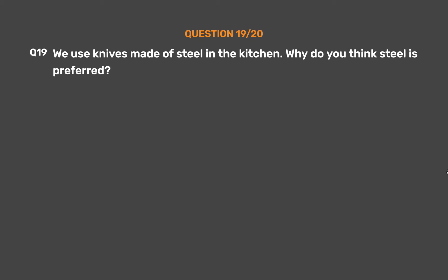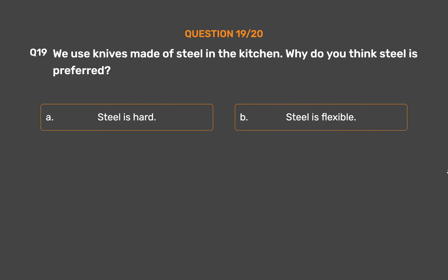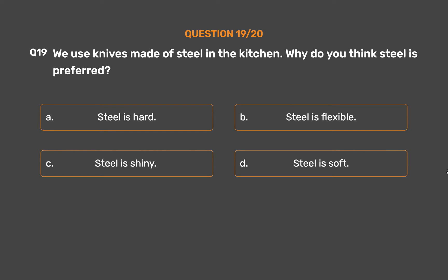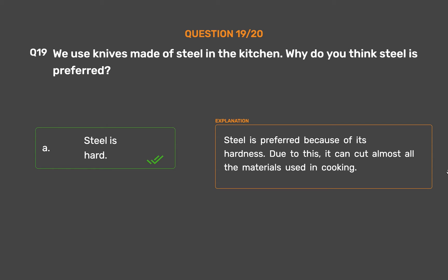Question number 19. We use knives made of steel in the kitchen. Why do you think steel is preferred? Option A: Steel is hard. Option B: Steel is flexible. Option C: Steel is shiny. Option D: Steel is soft. The correct answer is Option A, Steel is hard. Steel is preferred because of its hardness. Due to this, it can cut almost all the materials used in cooking.